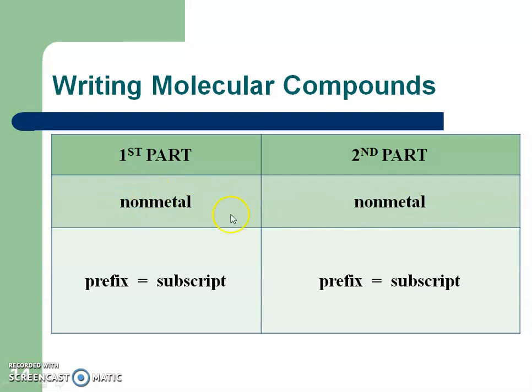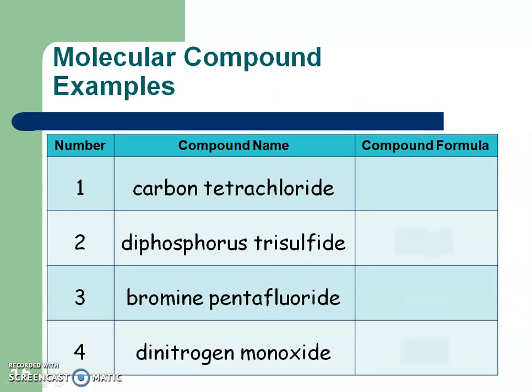The first part of a molecular compound is a nonmetal and the second part is a nonmetal as well. The prefix in the name gives us the subscript in the formula. Here are some examples — try listening to the first two, then pause and write the chemical formula, and do the same for three and four. How do we write the chemical formula for carbon tetrachloride?